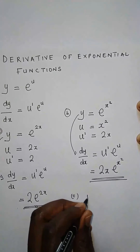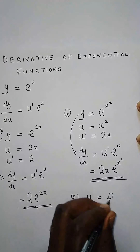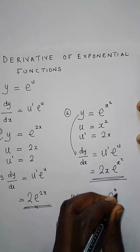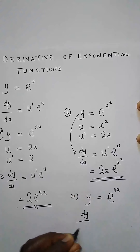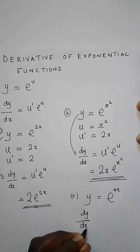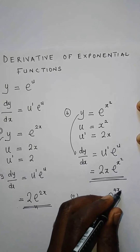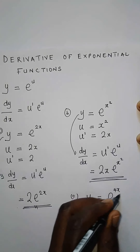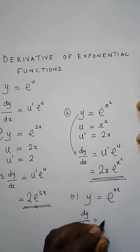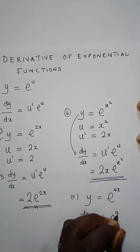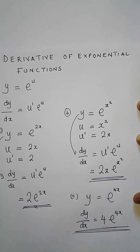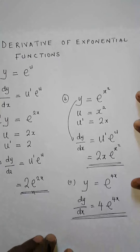This is how simple it is. You can have y equals e to the power 4x. We say dy/dx equals the derivative of the power 4x, which is just 4, and then we write the original function just like that. So we have 4e to the power 4x.